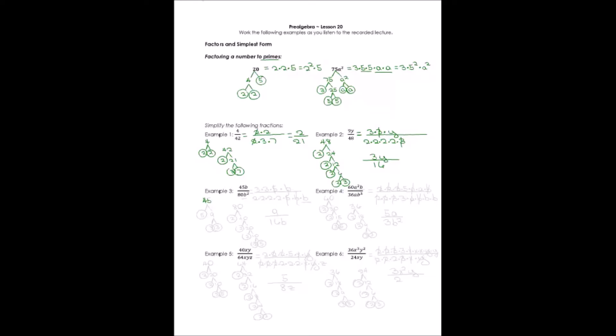Let's take example 3. We're going to factor 45b. I'll just factor 45 because b factors into plain old b. 45 is 5 times 9, and 9 is 3 times 3. I probably could have done that in my head. So 45b equals 3 times 3 times 5 times b. Start with the smallest numbers and work your way up — you make fewer mistakes that way. And don't forget, if there's a variable, include it: times b.